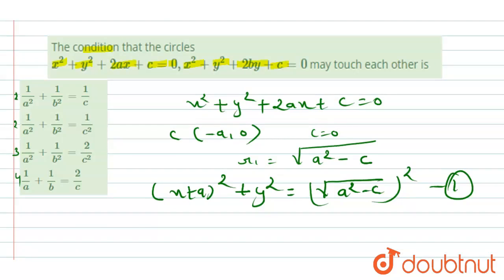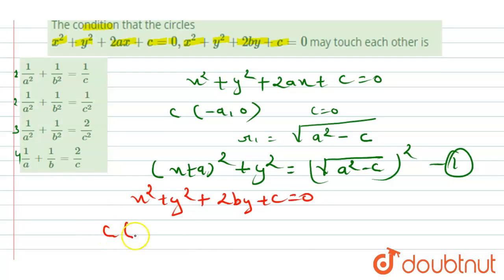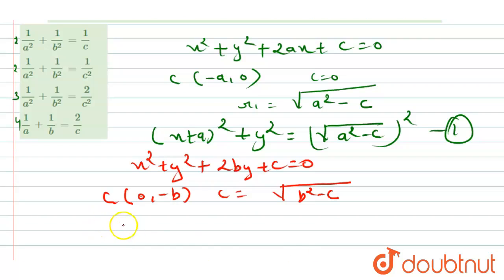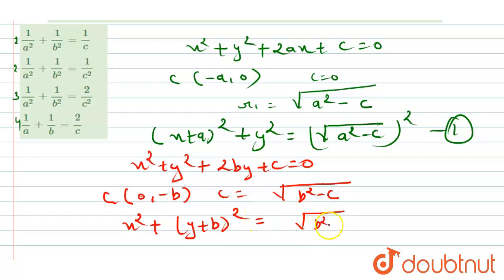For the second equation x² + y² + 2by + c = 0, we find the center is (0, -b) and c becomes b² - c. The equation of the circle becomes x² + (y + b)² = (√(b² - c))².